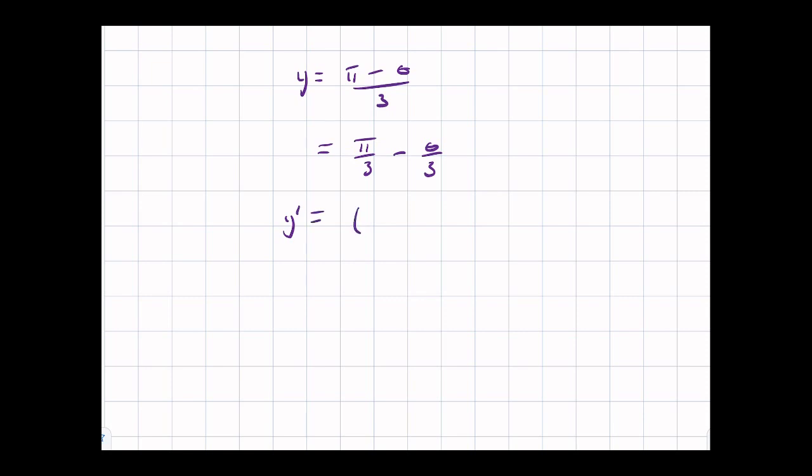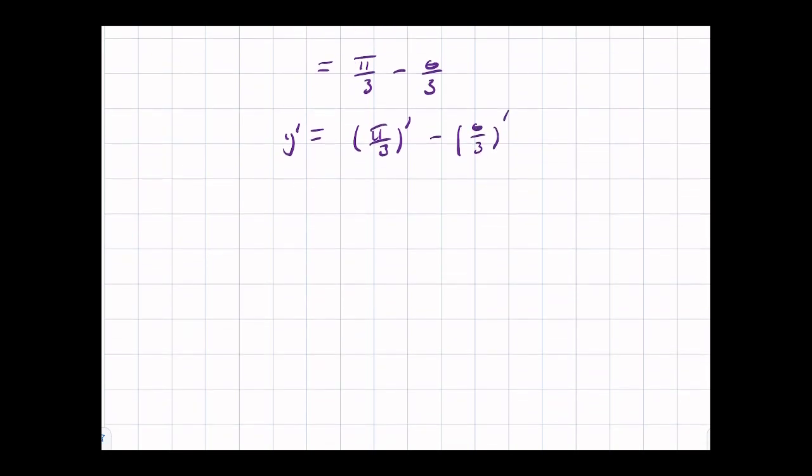So I can split this up, and now it becomes clear that y prime is pi over 3 prime minus theta over 3 prime. We know that this is one of those derivative rules that nobody ever pays attention to because it seems obvious, but then it comes in handy in situations like this.